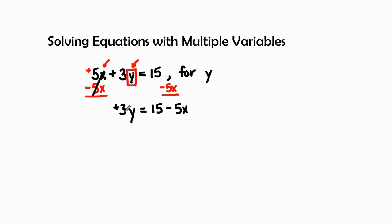So let's go ahead, and once again, I have my students box the y. So I say what's attached to this y is a 3, a positive 3, and it's attached by multiplication. So how I get rid of multiplication is by division. So I'm going to divide both sides by 3.